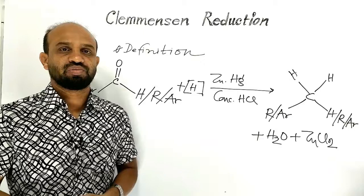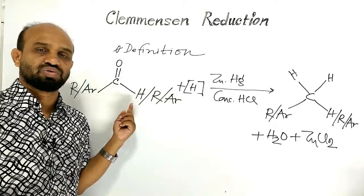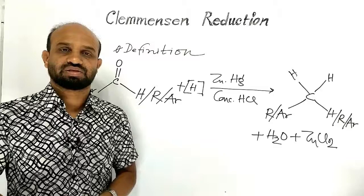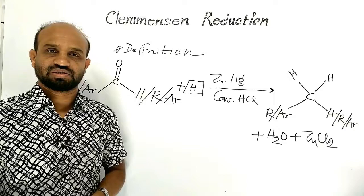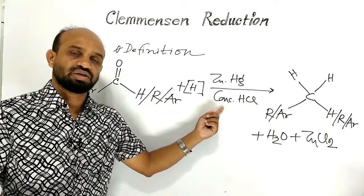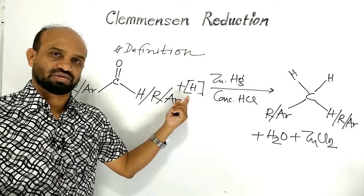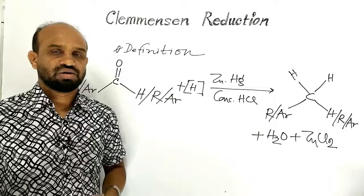The reagent — zinc amalgam and concentrated hydrochloric acid — reduces this carbonyl group with the help of nascent hydrogen [H], meaning hydrogen that is not fully developed, raw, and extremely reactive. This reagent is called Clemmensen's reagent, and this reaction is known as Clemmensen's reduction.